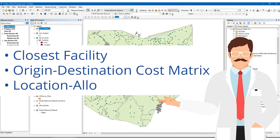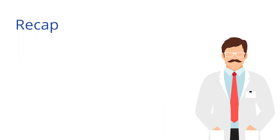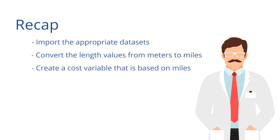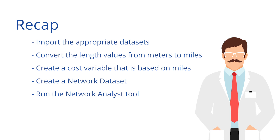To recap, let's review the steps to create a travel polygon using the network analysis tool in ArcGIS. First, import the appropriate datasets that are required for the analysis, including the point dataset with the location of the providers, the point dataset with the HPSA centroid, and the network dataset. Second, convert the length values from meters to miles in the network dataset. Third, create a cost variable that is based on the miles length variable. Fourth, create a network dataset. Fifth, run the network analyst tool using the service area method to calculate the travel polygon. And finally, select the providers who are located within the 60-minute travel polygon.